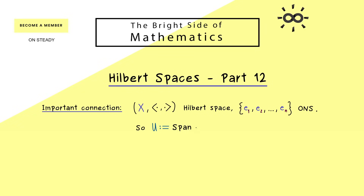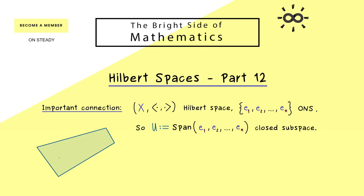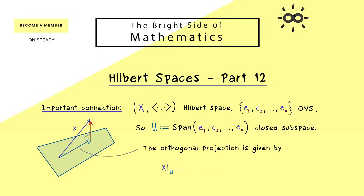We can write U as the span of these n vectors. We just have our closed subspace and we project vectors onto it. For a vector x, the orthogonal projection is unique and exists. Moreover, the normal component for x is orthogonal to the subspace U. It turns out this orthogonal projection can be calculated using our ONS — we project x separately onto each direction. A projection onto the e1 direction looks like e1 times the inner product of e1 with x, since e1 has length 1.